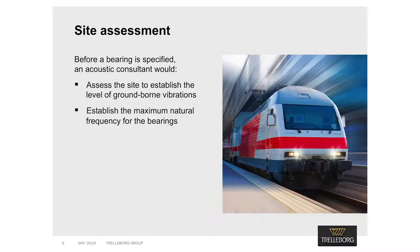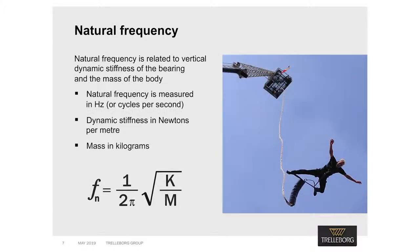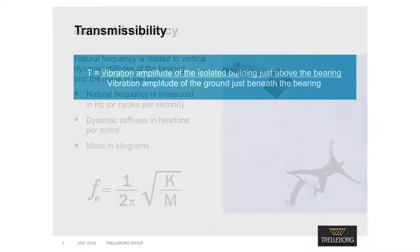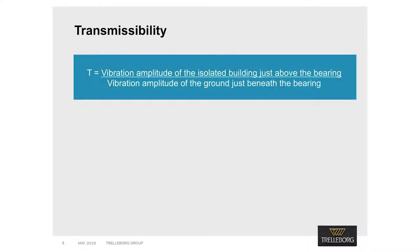Before we study the relationship between a building's isolated natural frequency and the ground's disturbing vibration frequency, we'll explain what is meant by natural frequency. The natural frequency of a body supported by a spring is related to the vertical dynamic stiffness of the bearing and the mass of the body. Natural frequency is measured in hertz or cycles per second, dynamic stiffness in newtons per metre, and mass in kilograms.